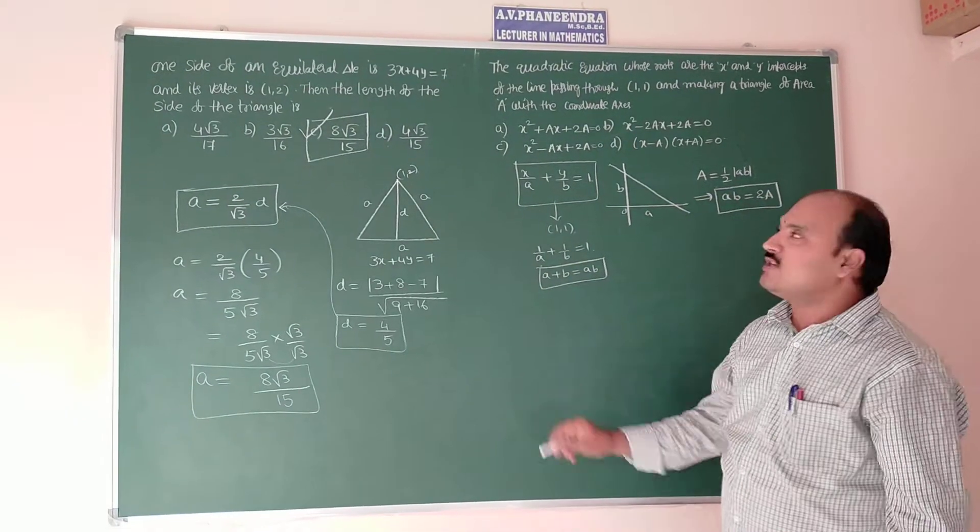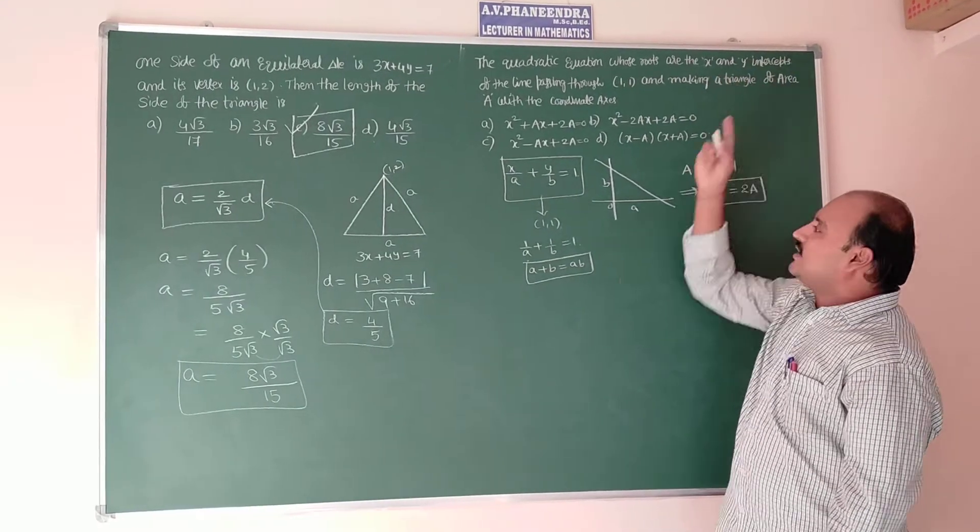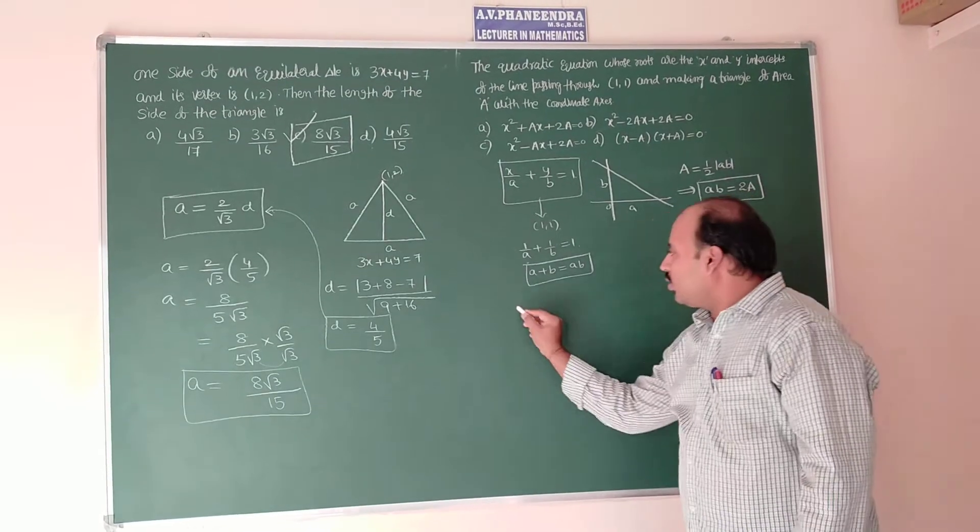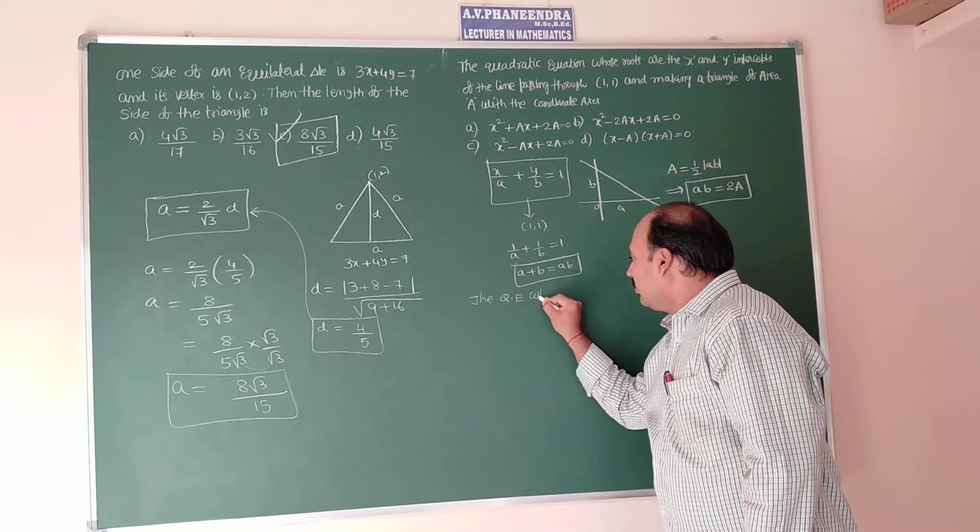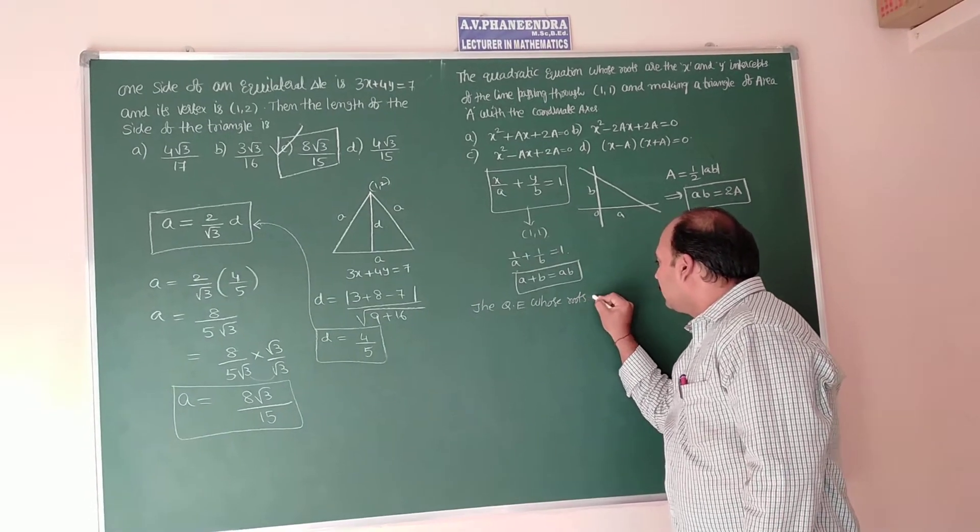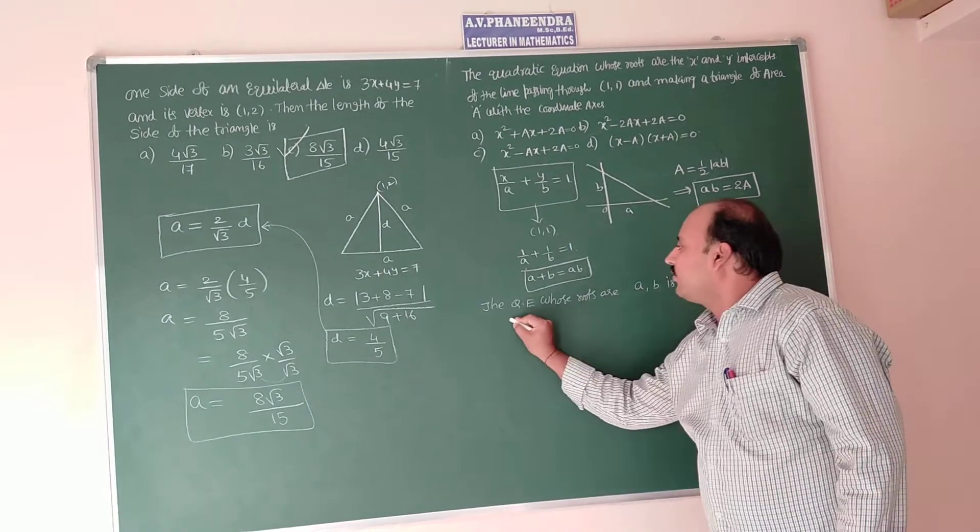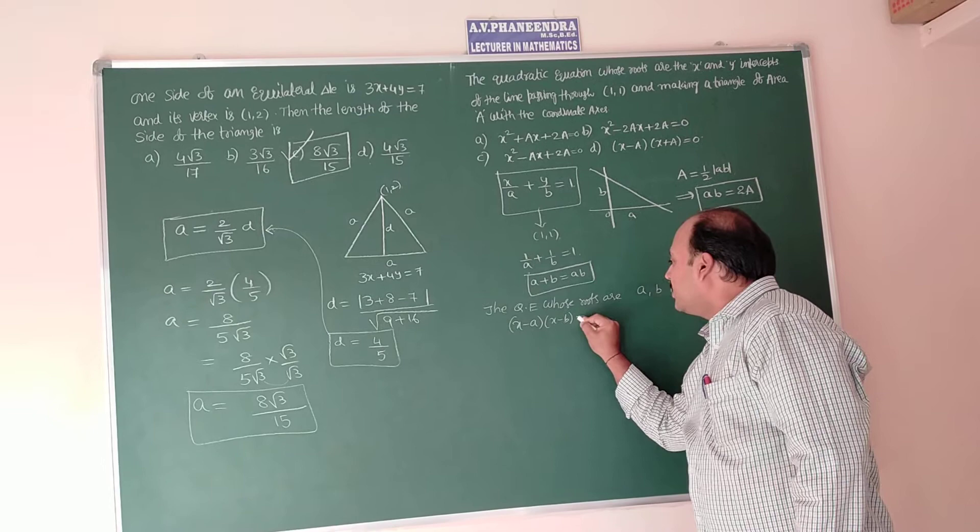Next, what they are asking to calculate is the quadratic equation whose roots are x and y intercepts. X intercept is A, y intercept is B. The quadratic equation whose roots are A comma B is x minus A into x minus B is equal to 0.